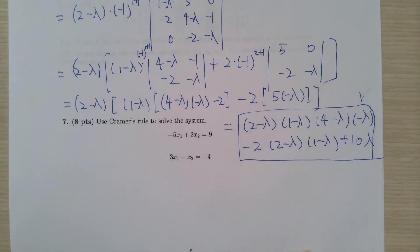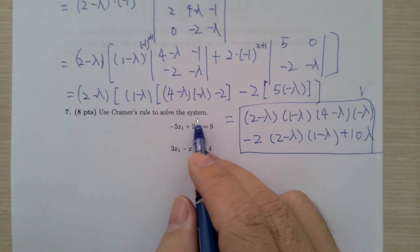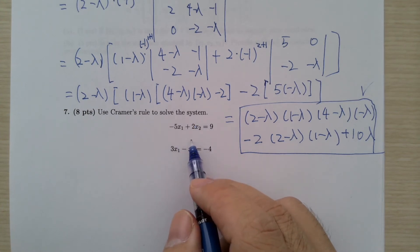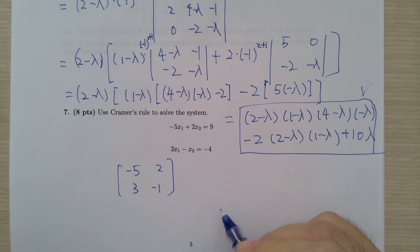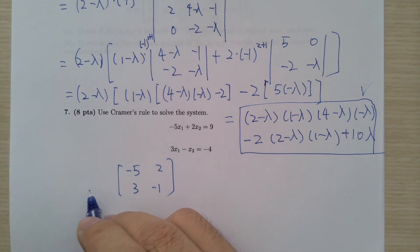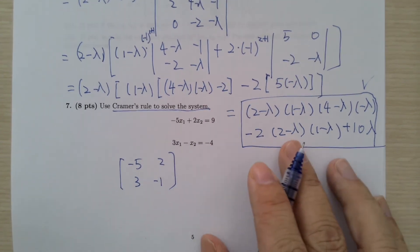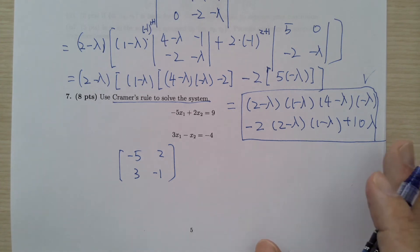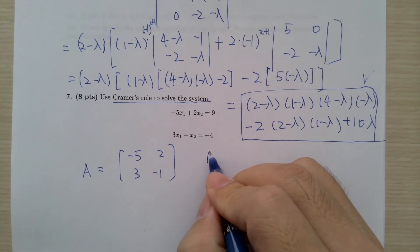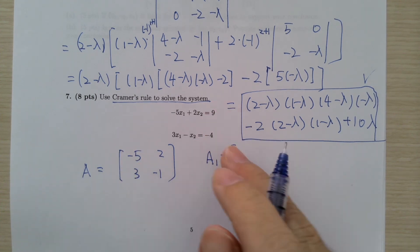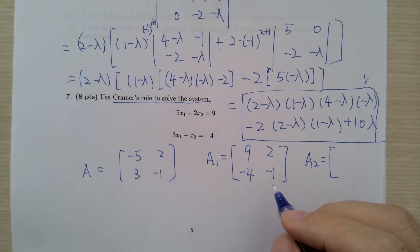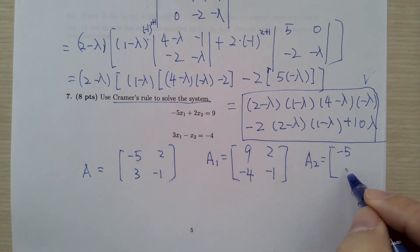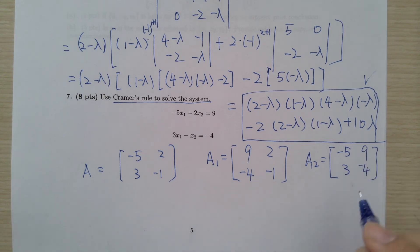The other problem asks us to use Cramer's Rule to solve a system. We set up the matrix A with entries -5, 2, 3. The matrix A1 replaces the first column with the right-hand side, giving -4, 2, -1. Matrix A2 replaces the second column, keeping the first column as -5, 3, giving 9, -4.